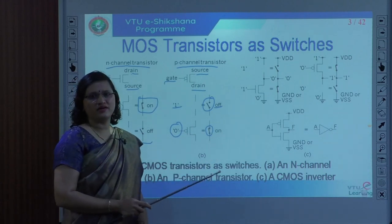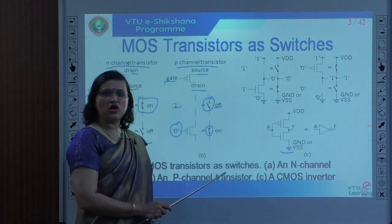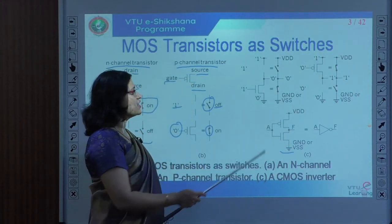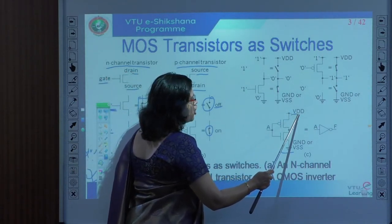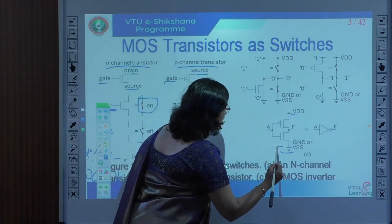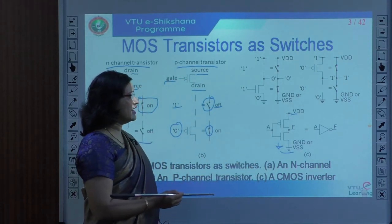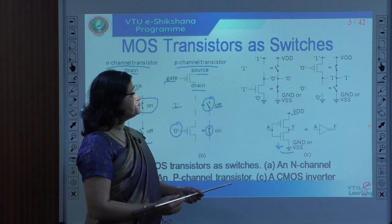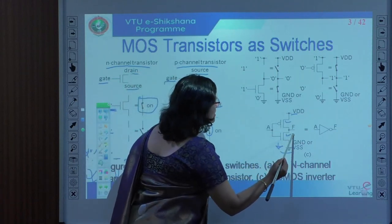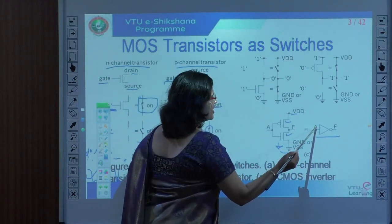Now we will discuss the concept of the inverter. This is a CMOS inverter — CMOS stands for complementary metal oxide semiconductor. It requires both P-channel and N-channel transistors. The horizontal bar at the top indicates VDD, and the triangle at the bottom indicates ground or VSS. The P-channel transistor is on top and the N-channel transistor is on the bottom.